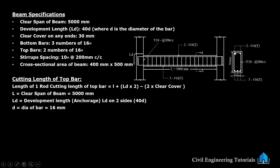Top bar diameter is 16 mm, 2 numbers of bar. Clear cover on both ends is 30 mm. So, top bar: clear span 5000 mm plus 2 into 40D minus 2 into clear cover 30 mm. We are getting the cutting length of top bar.